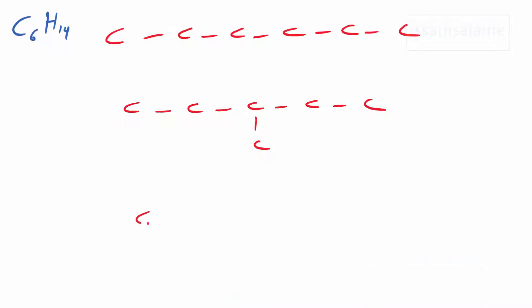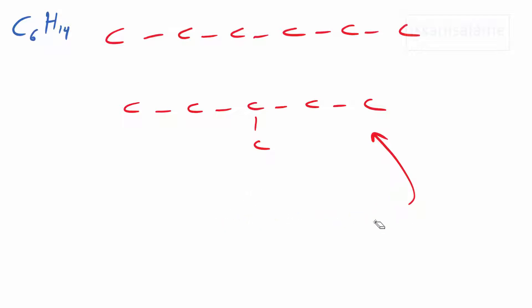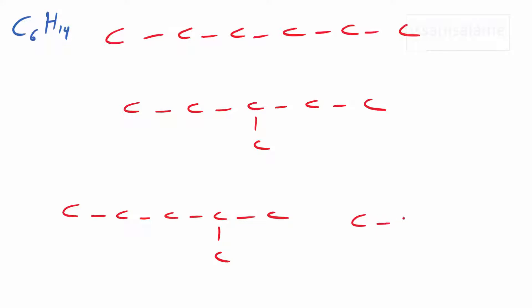If I try putting that branch from above, it gives the same name, so I'll erase it. What if I keep the longest chain as five carbons and add the branch to a different carbon — like the second carbon? That gives a different structure with a different name. Adding it to the other end carbon gives the same structure as before, because I can count from either end.